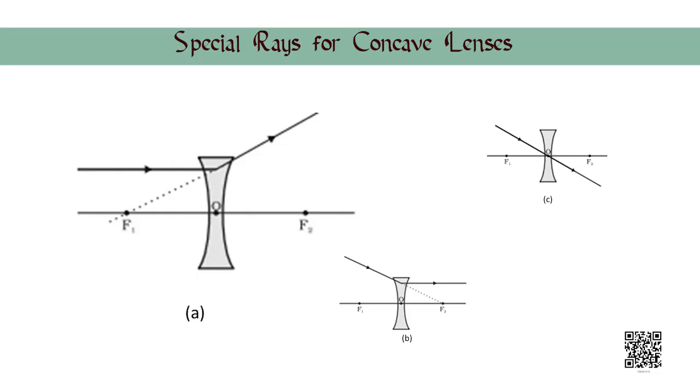Before we venture out to frame images, let us have a quick recap of the special rays used for framing images using concave lenses. A ray of light from the object parallel to the principal axis, after refraction from a concave lens, appears to diverge from the principal focus as shown in figure A.